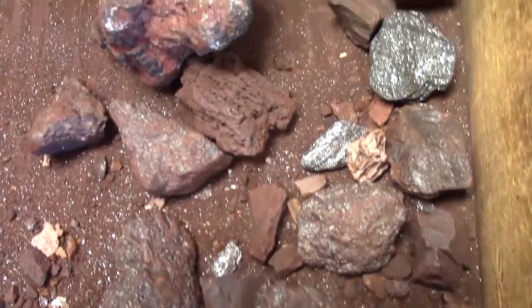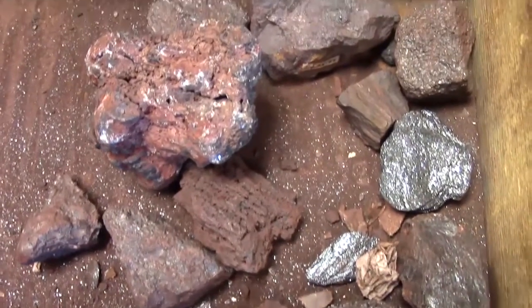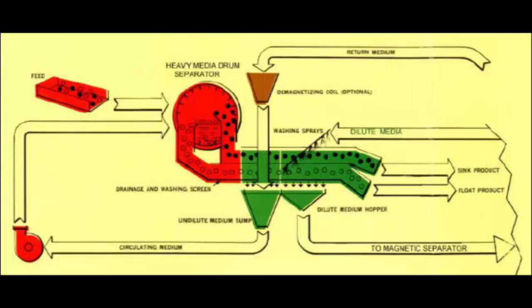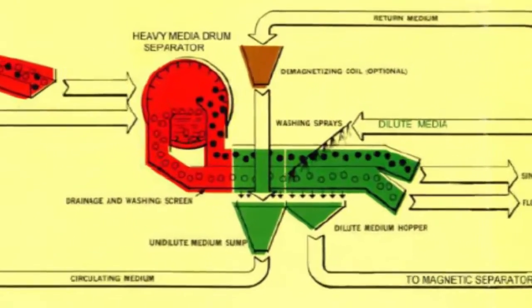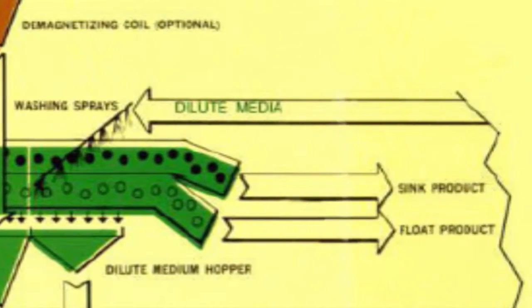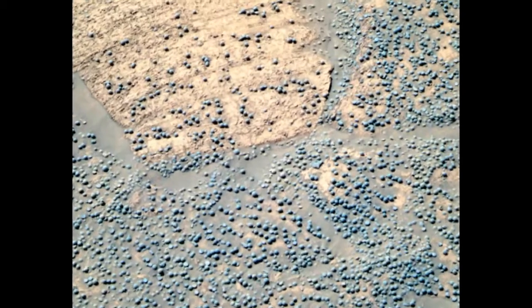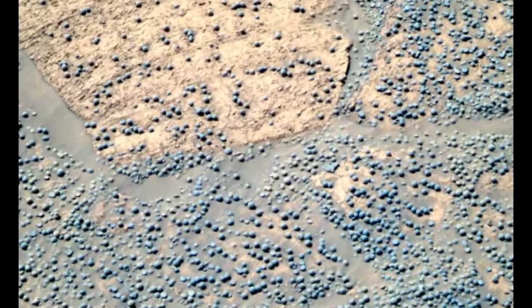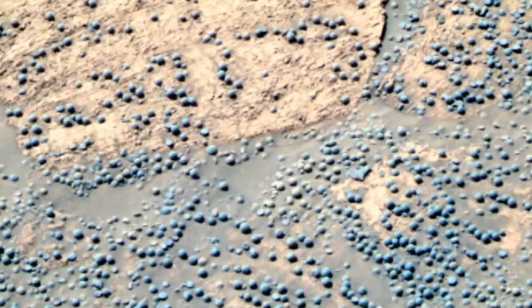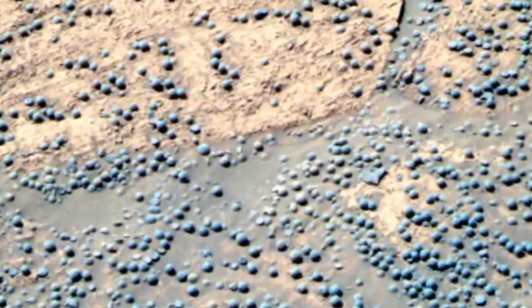When powdered hematite is mixed with water, you can get an exact density liquid that can be used to separate coal from its heavier impurities. As a side note, the famous blueberries on Mars turned out to be hematite concretions weathering out of the sandstone, which occurs here on Earth as well.